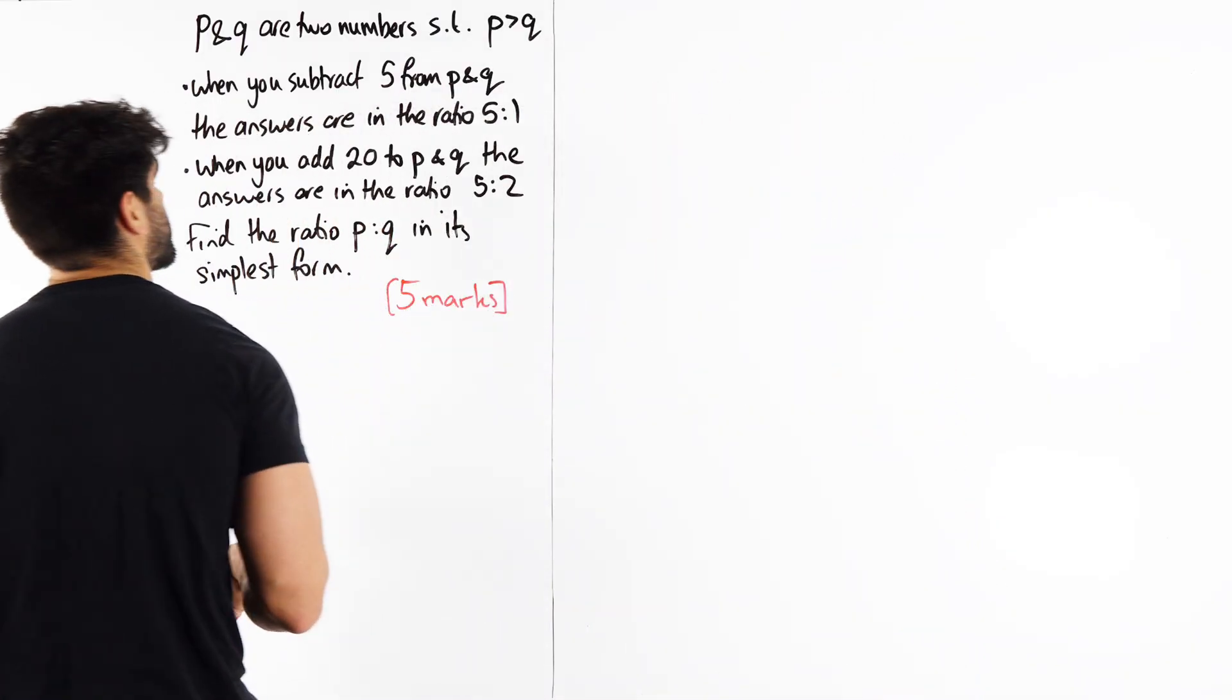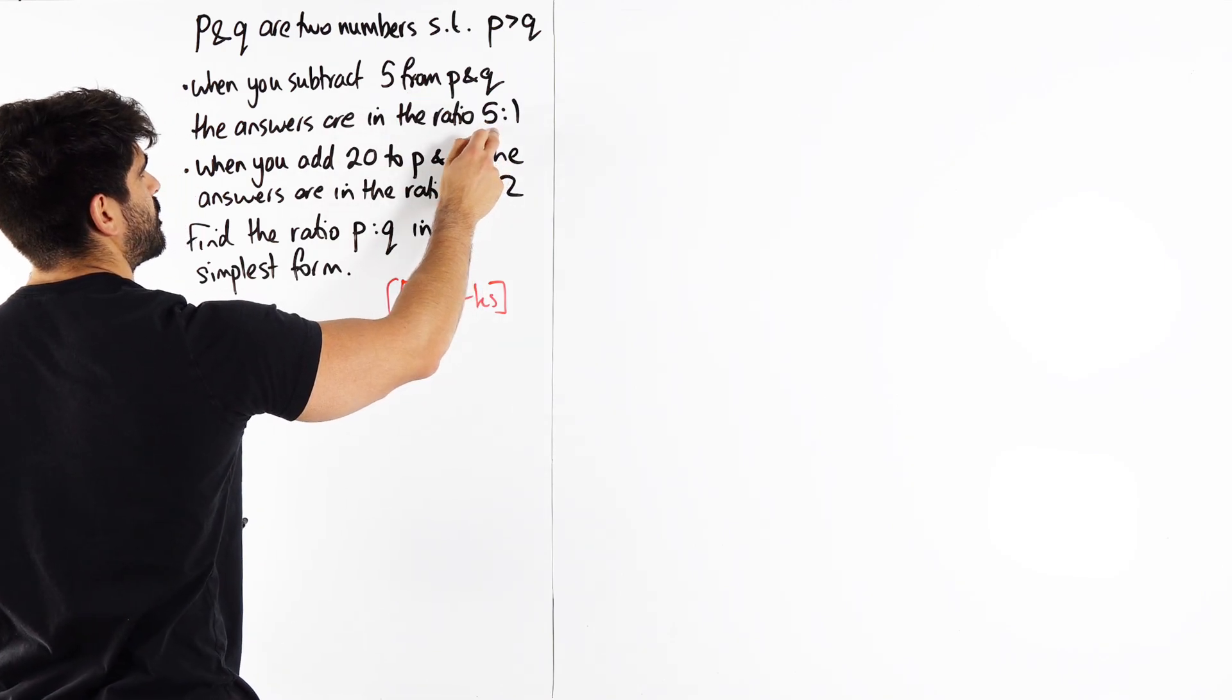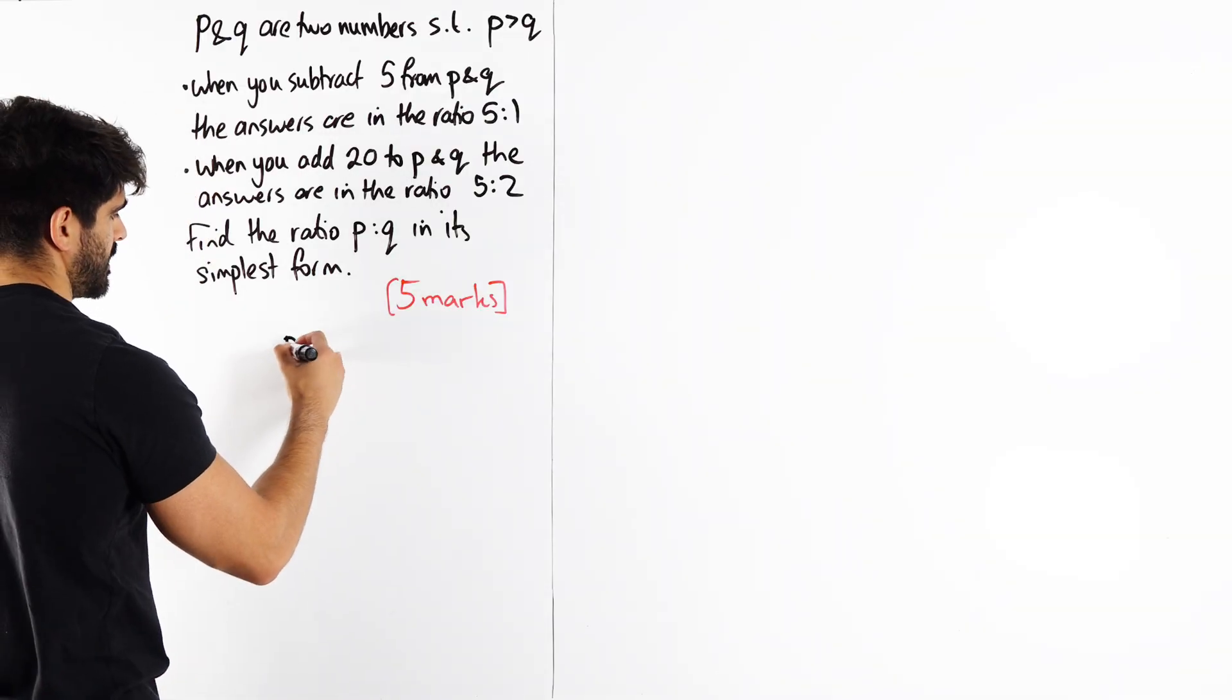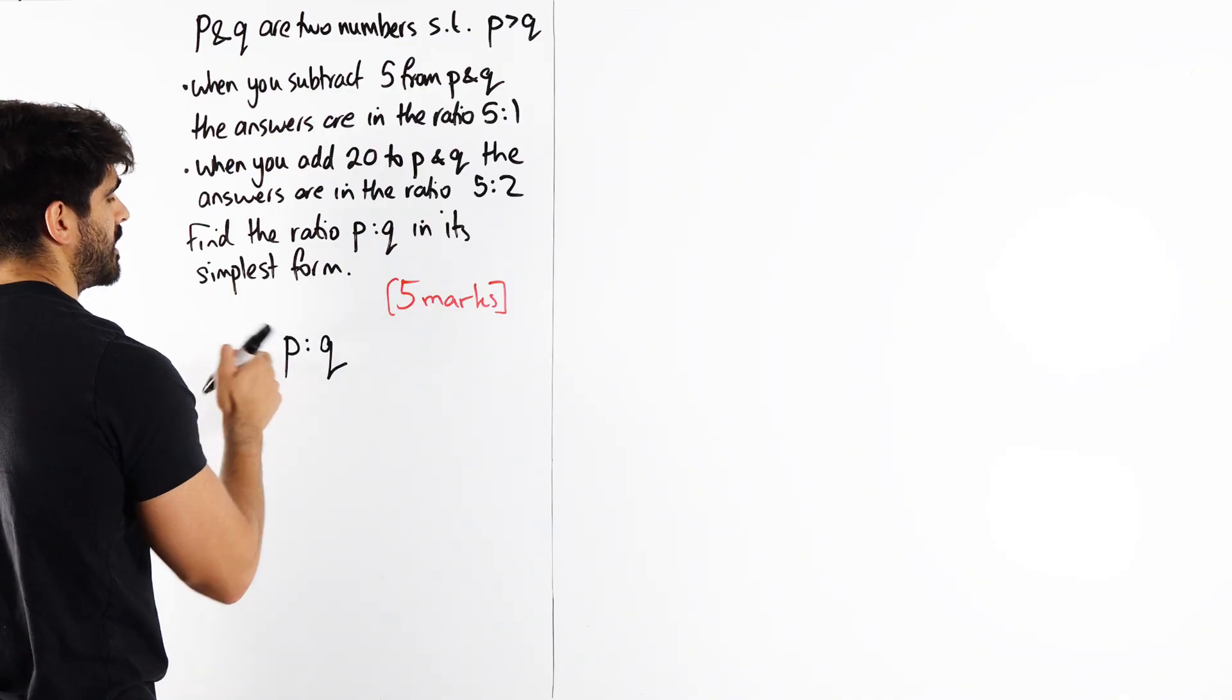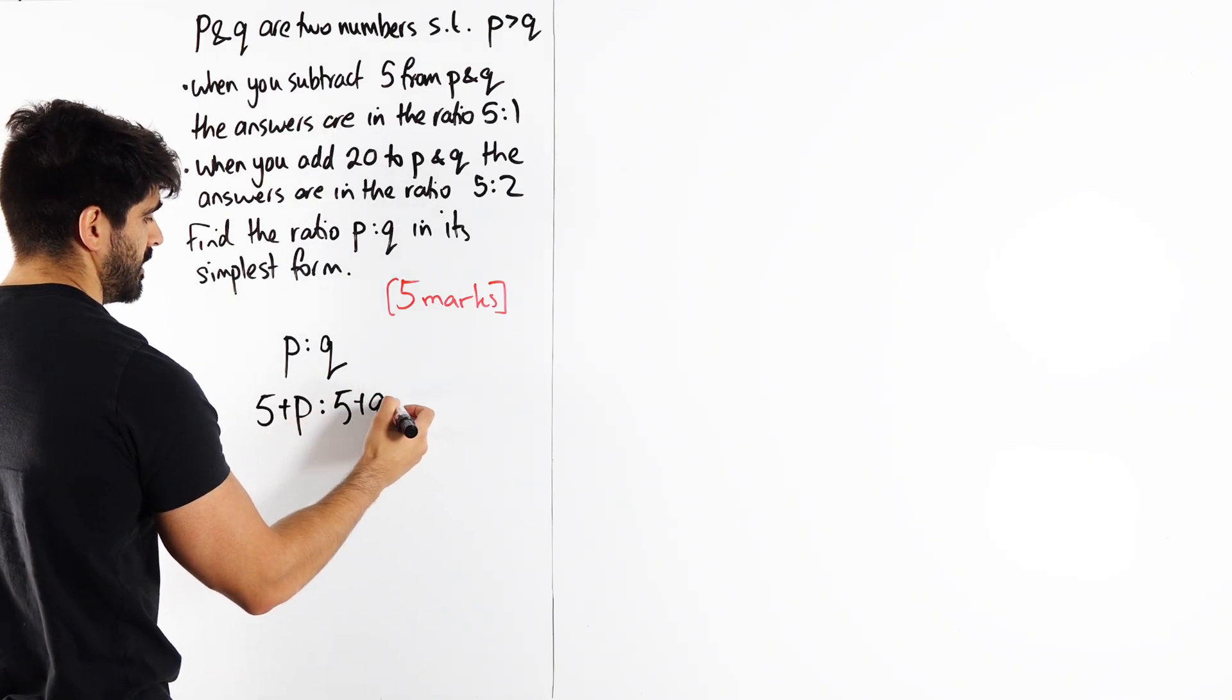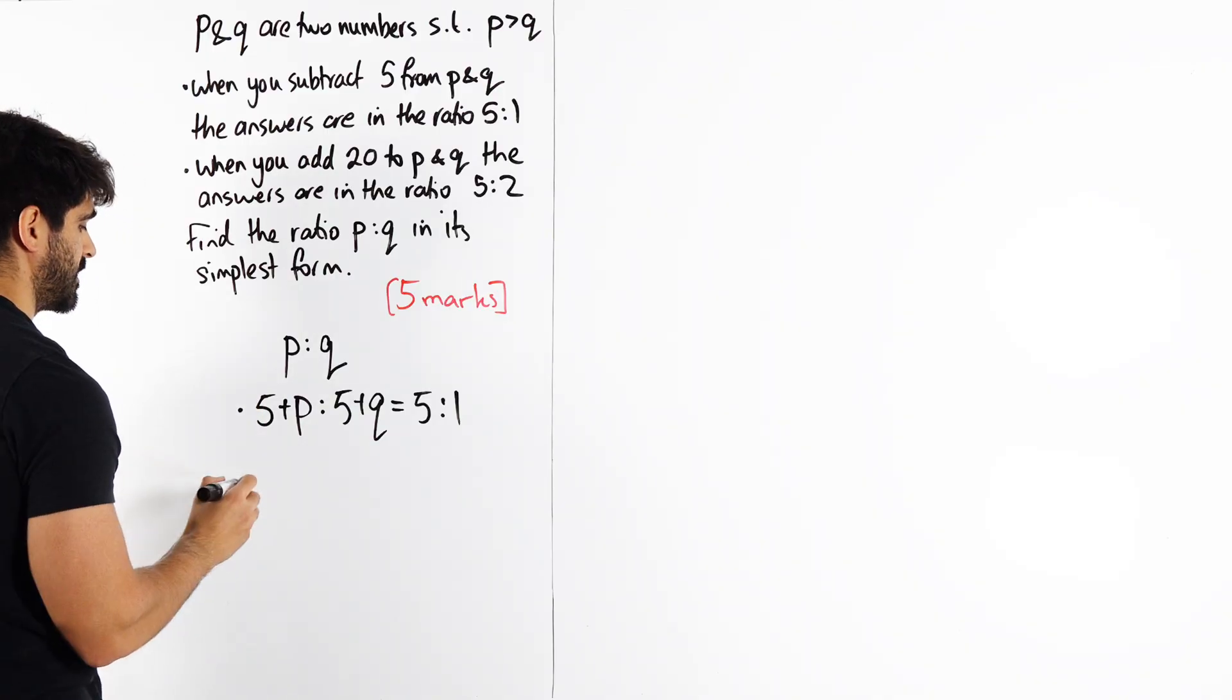It's important that they tell us that P is greater than Q because that's the one that we're going to put on the left side. They're saying, look, if you take this ratio P to Q, if you add 5 to both of these, it becomes 5 to 1. So P minus 5 and Q minus 5 is equal to 5 to 1. That's the first thing.